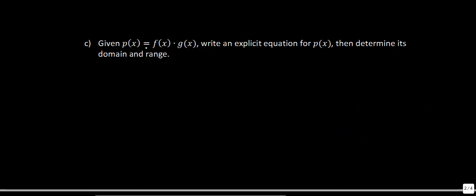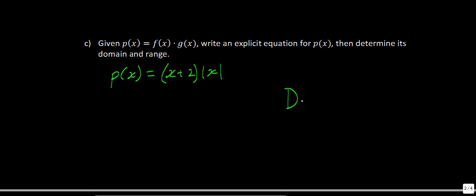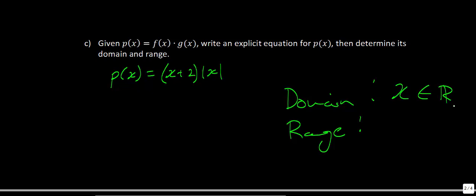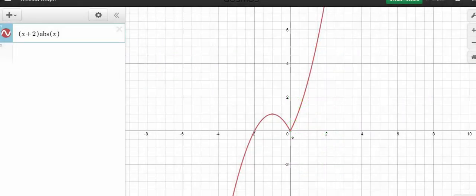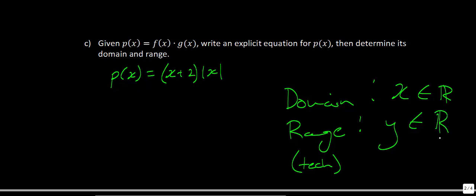For part c, given p(x) = f(x) · g(x), the explicit equation is p(x) = (x + 2) · |x|. The domains of both functions were all reals, so the domain of p(x) is also all reals. Using Desmos to find the range, we can see y is also a member of the reals.